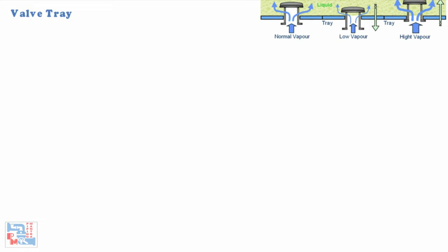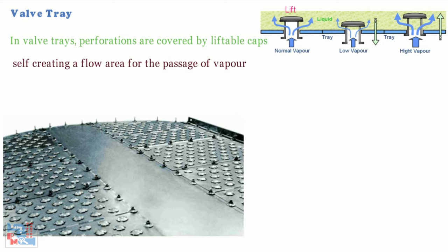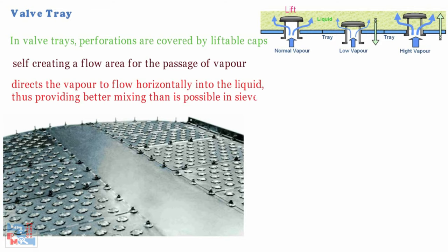Now comes valve trays. In valve trays perforations are covered by liftable caps. Vapor flow lifts the cap thus self-creating a flow area for the passage of vapor. The lifting cap directs the vapor to flow horizontally into the liquid thus providing better mixing than is possible in sieve trays.